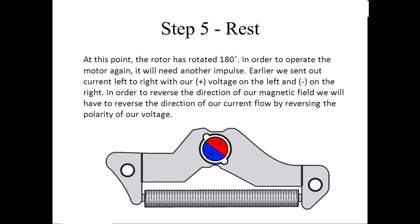Step 5: Rest. At this point, the rotor has rotated 180 degrees. In order to operate the motor again, it will need another impulse. Earlier we sent out a current left to right with our plus voltage on the left and minus on the right. In order to reverse the direction of our magnetic field, we will have to reverse the direction of our current flow by reversing the polarity of our voltage.